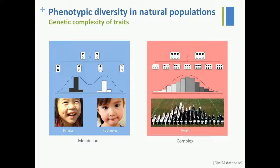One of the major challenges today in biology is to explain and look for the genetic causes of phenotypic diversity we can observe in natural populations. The inheritance patterns of traits can be classified as Mendelian or monogenic, where you have a bimodal distribution, or complex, with a normal distribution. But that's an overly simplified view of what we have.